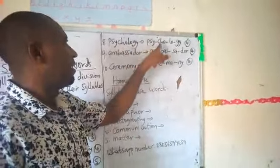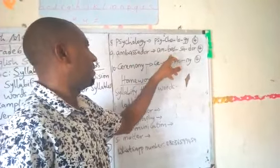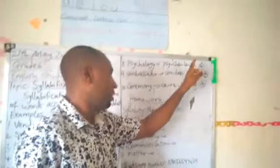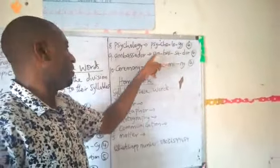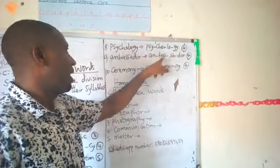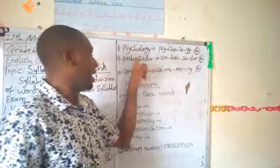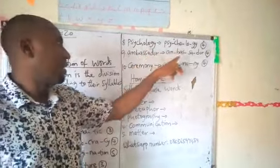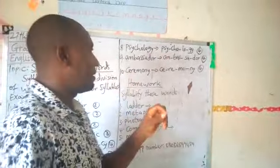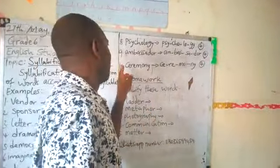Number nine: ambassador. Ambassador — it has four syllables, so we call it a polysyllabic word. Just like the rule of number three, it is also applicable in number nine, where you have to separate two similar consonants — S, as in ambassador. You separate the two S's so that they will not remain in one syllable. You also observe that each syllable contains a vowel.